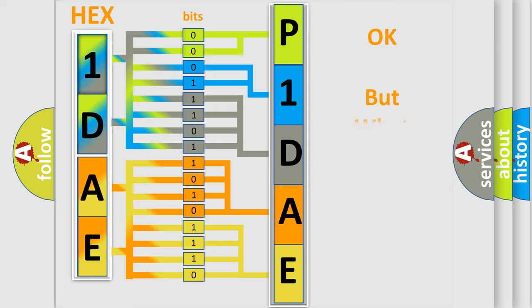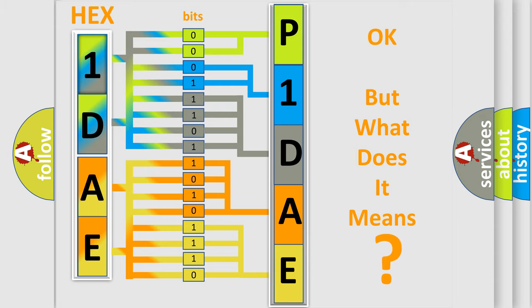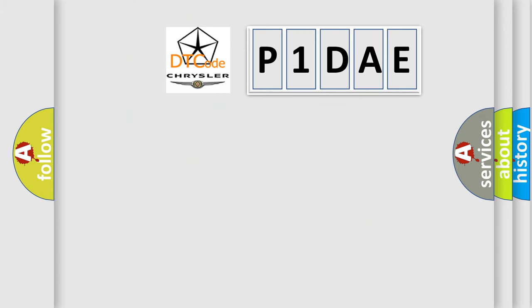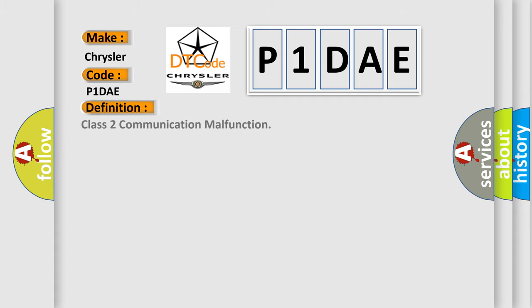We now know in what way the diagnostic tool translates the received information into a more comprehensible format. The number itself does not make sense to us if we cannot assign information about what it actually expresses. So, what does the Diagnostic Trouble Code P1DAE interpret specifically for Chrysler car manufacturers?